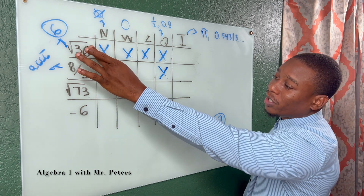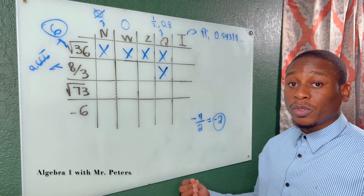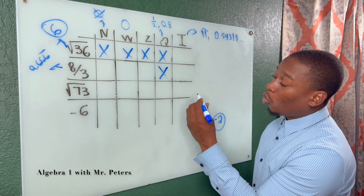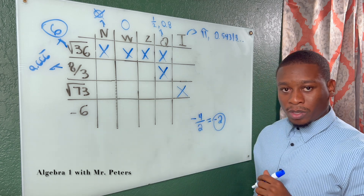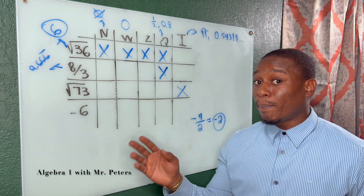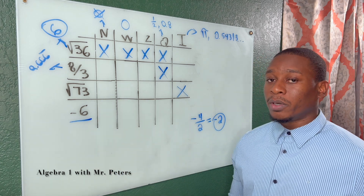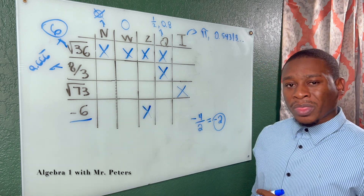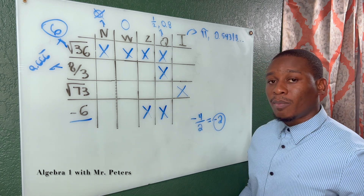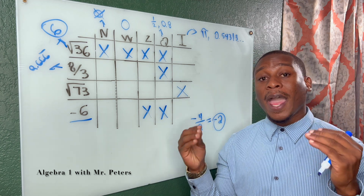Unlike radical 36, radical 72 is not a perfect square. If we convert it to decimal form using a calculator, it's going to be a decimal that does not end or repeat, so it's irrational. Remember that natural and whole numbers are only positive whole numbers. So negative 6 is not a natural number or whole number, but it is an integer and a rational number.